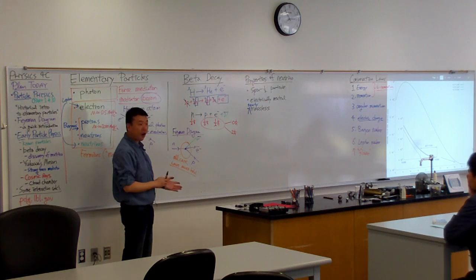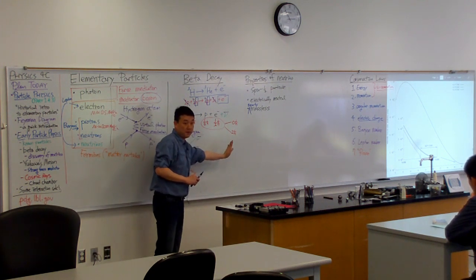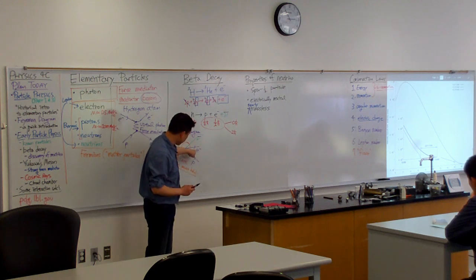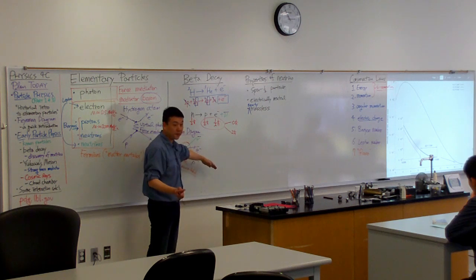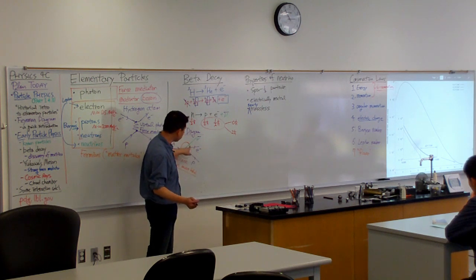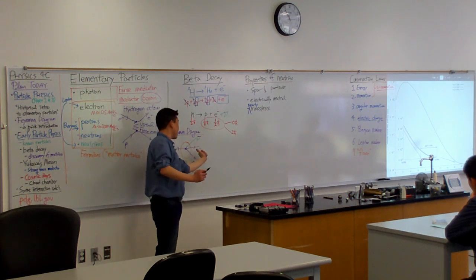And in Feynman's diagram, we already indicate passage of time from left to right, right? Which means these arrows are actually redundant if all you are trying to say is that that's the direction that the particle is going.